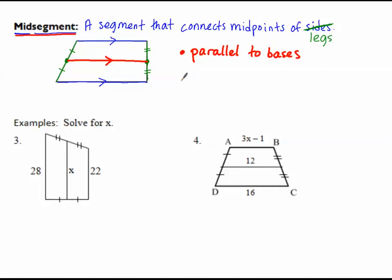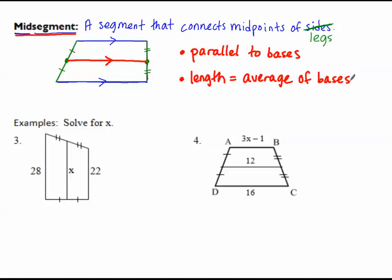The other important property involves the lengths. The mid-segment is the shortest, the longest is the longest base, and the mid-segment is exactly halfway in between — just like a mid-point is exactly halfway between two endpoints. The length of the mid-segment is the average of the two bases: base 1 plus base 2, divided by 2.